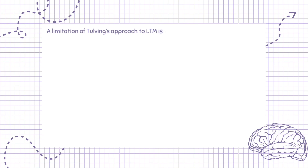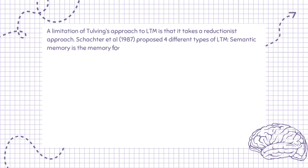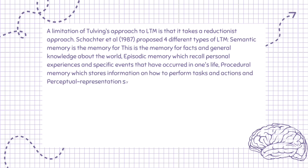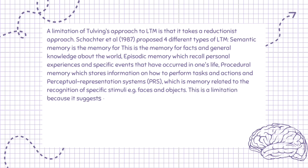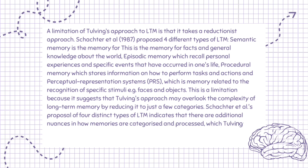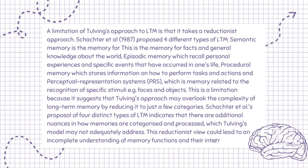A limitation of Tulving's approach to LTM is that it takes a reductionist approach. Schachter et al., 1987, proposed four different types of LTM: semantic memory (facts and general knowledge), episodic memory (personal experiences), procedural memory (how to perform tasks), and perceptual representation systems (PRS) — memory related to the recognition of specific stimuli such as faces and objects. This is a limitation because it suggests Tulving's approach may overlook the complexity of long-term memory by reducing it to just a few categories, potentially leading to an incomplete understanding of memory functions and their interrelations.